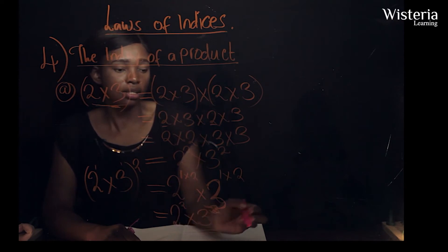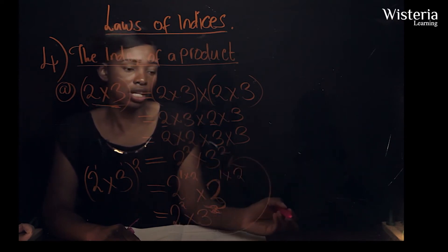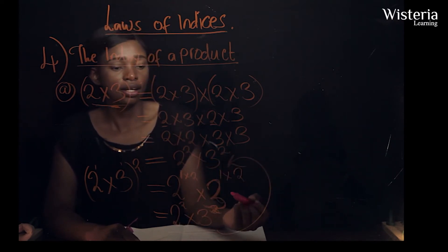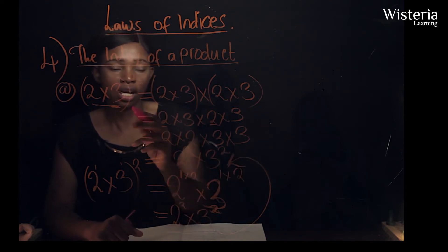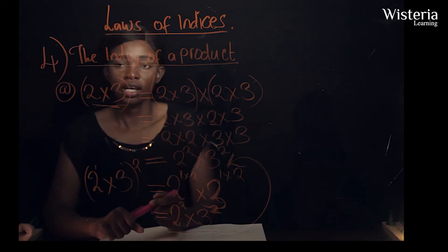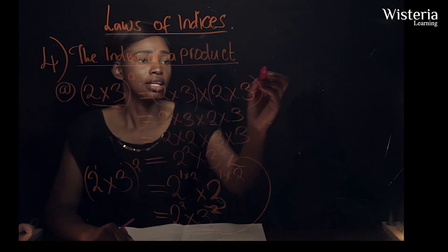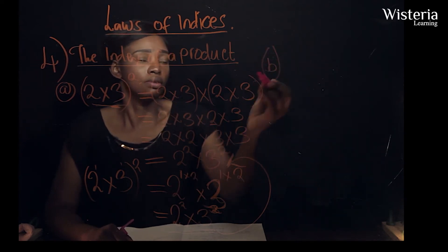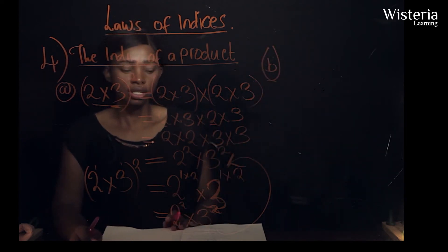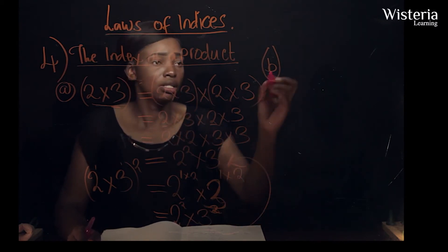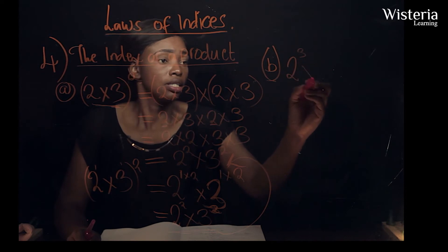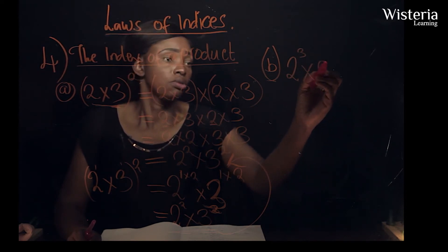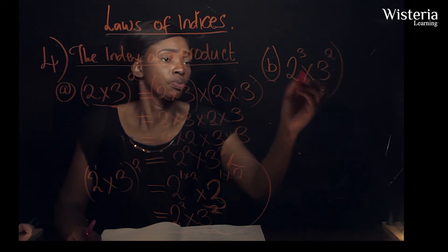This answer is the same as what we found using the longer method, so this is the easiest way to solve indices in this form. Let's look at another example for the index of a product: we can have two to the power three times three to the power two, all raised to the power five.